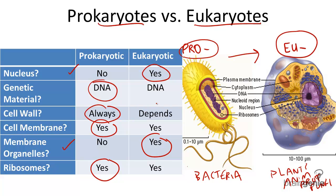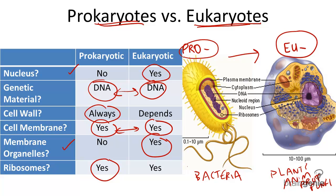It is important to remember that despite the many differences that prokaryotic cells and eukaryotic cells have, three important things remain in common in nearly all cases. Both prokaryotes and eukaryotes have genetic material, they have plasma membranes, and they have ribosomes.